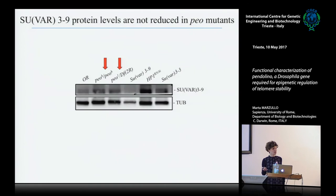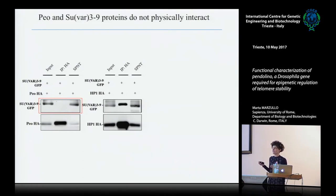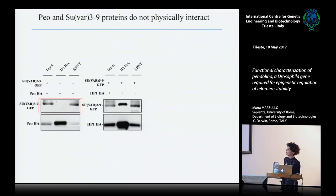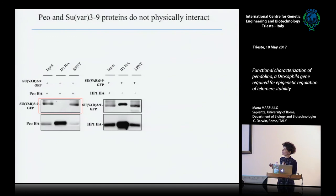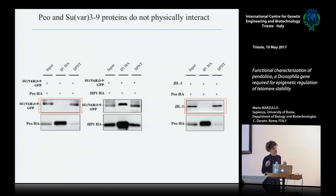To understand the relationship between these proteins, we performed co-immunoprecipitation experiments to evaluate possible protein-protein interactions. Unfortunately, we did not find any interaction. Here are two examples: a co-IP experiment in S2 cells performed with Peo-HA and SUVAR3-9-GFP showed that Peo fails to precipitate SUVAR3-9. Similarly, Peo also fails to precipitate JIL-1. So the strong genetic interactions we found are not due to direct protein interactions, but to some functional relationship between these proteins.